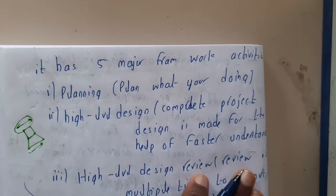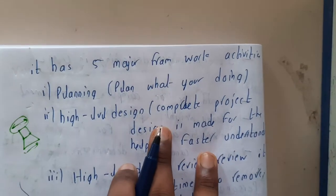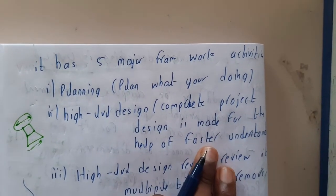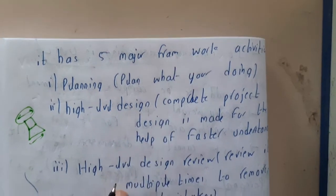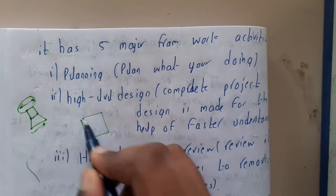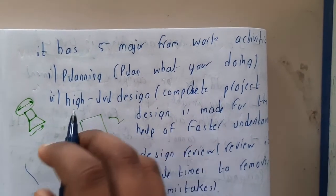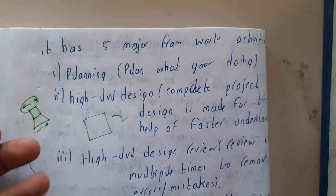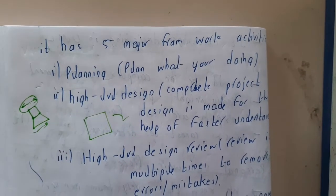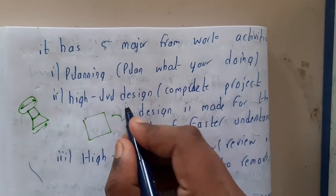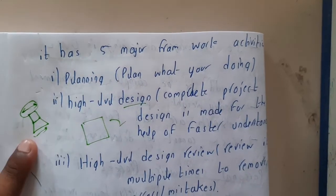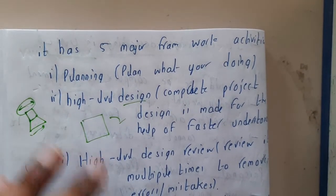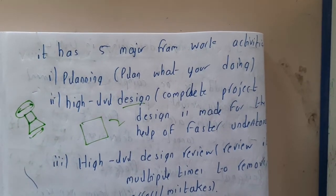The second activity is High-Level Design. Your project should be of the best design and should be easily understandable. A complete project design is made to help faster understanding. If the design is proper, the coding aspect will be really easy, because in design we declare what the classes, functions, and variables are. We will be going through design phases across four dedicated chapters.